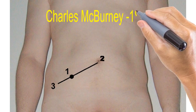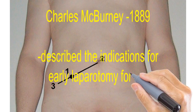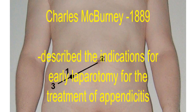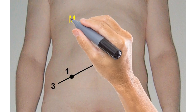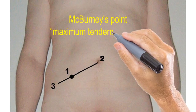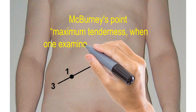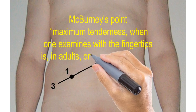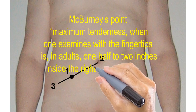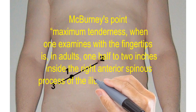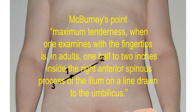The greatest contributor to the advancement in the treatment of appendicitis was Charles McBurney. In 1889, he published his landmark paper in the New York State Medical Journal describing the indication of early laparotomy for the treatment of appendicitis. It is in this paper that he described the McBurney point: maximum tenderness, when examined with the fingertips, is in adults one and a half to two inches inside the right anterior spinal process of the ilium on a line drawn to the umbilicus. McBurney subsequently published a paper in 1894 describing the incision that bears his name.